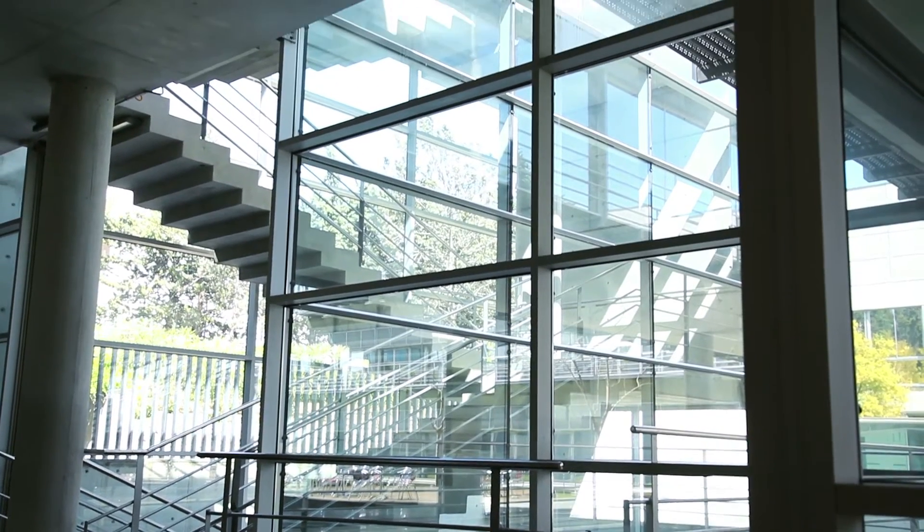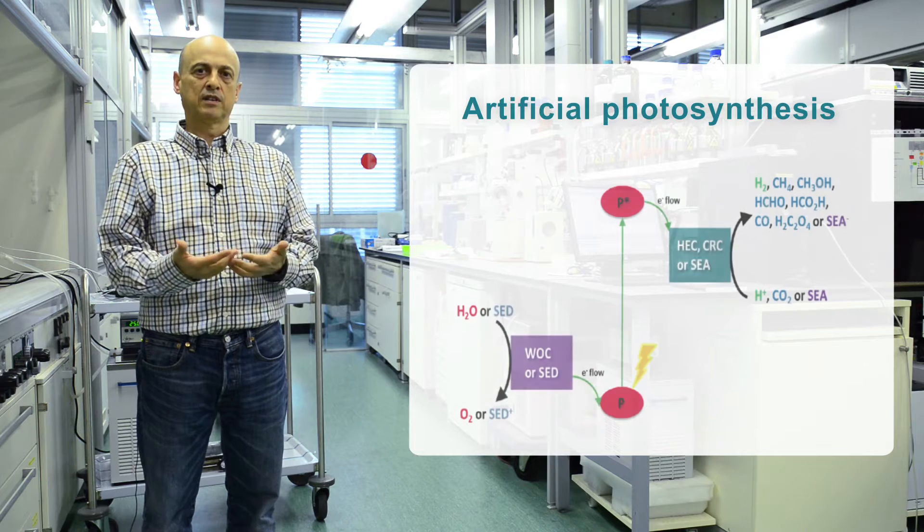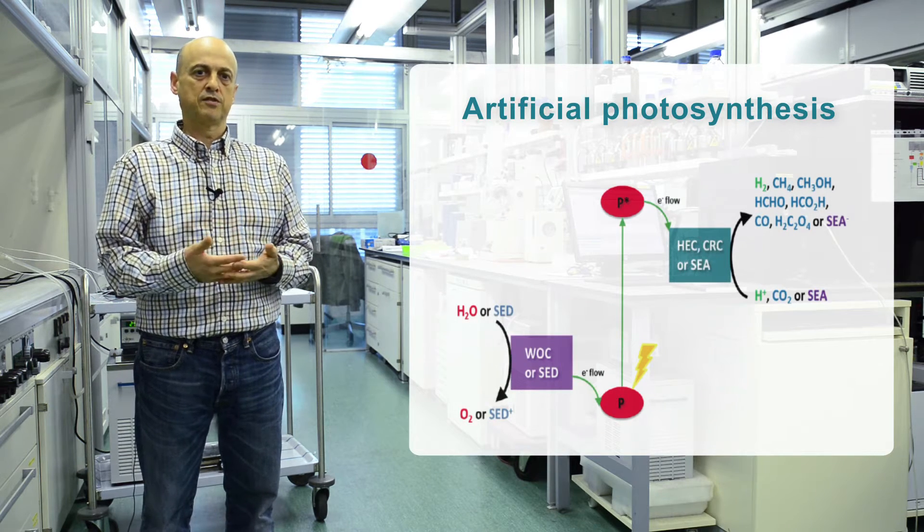My research group is interested in developing work related to artificial photosynthesis. Artificial photosynthesis is the different way nature transforms sunlight and CO2 into carbohydrates. And carbohydrates are basically the chemical fuel that nature uses to grow and to live.